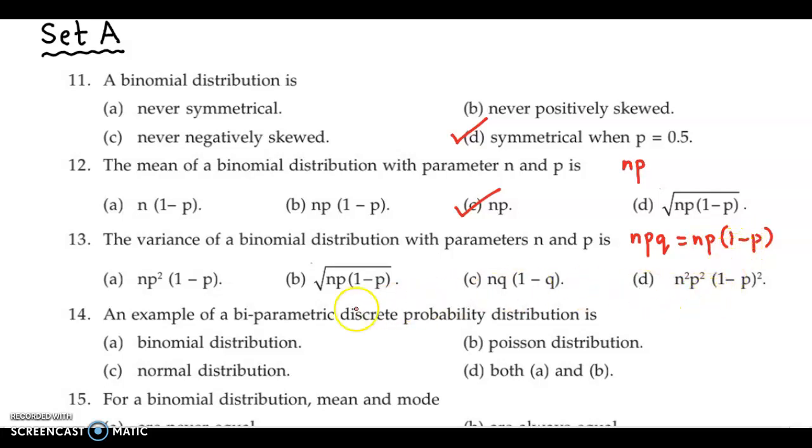So if we check with the options, now if we see option C, instead of p, they have mentioned everything in terms of q. So what we could do is, we could replace this. See, we could write this as n into...